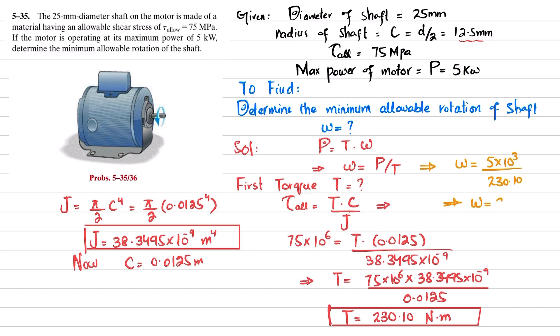When you solve this, you will get angular velocity is equal to 21.7 radians per second. So this is the minimum angular velocity or minimum allowable rotation of the shaft or angular velocity of this motor. And that was all about this problem 5-35.